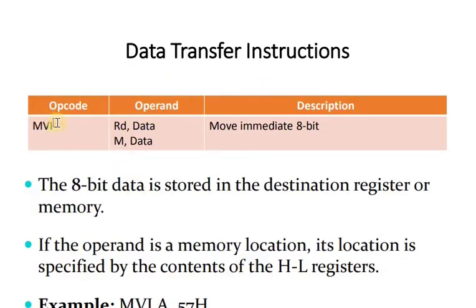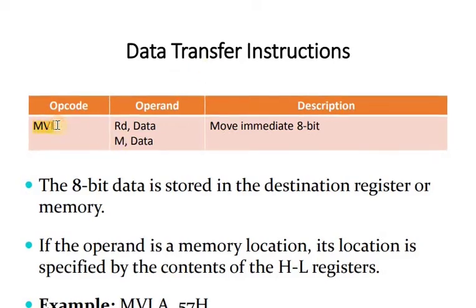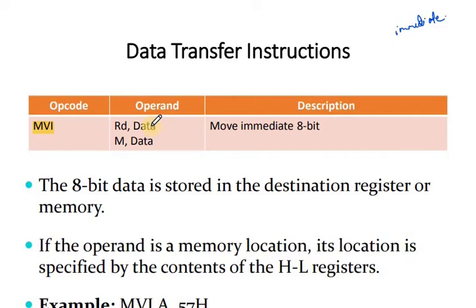Moving on to the next instruction: MVI, which means Move Immediate. In MVI, the operands are a register (or memory location) and data. The source is direct data, not another register — that is why we use immediate. MVI is the instruction used to move immediate data to a destination register or memory location.